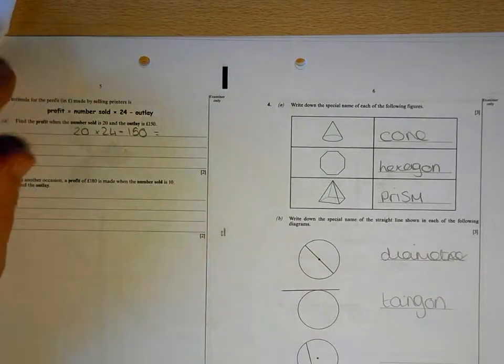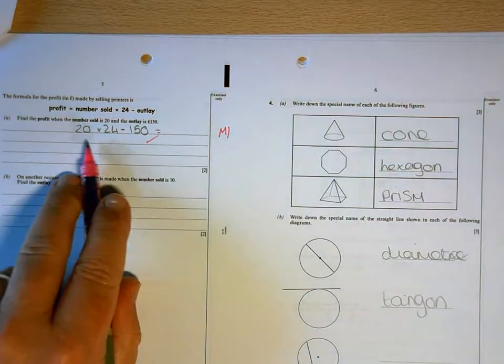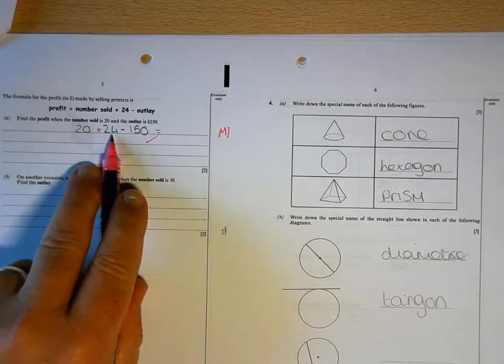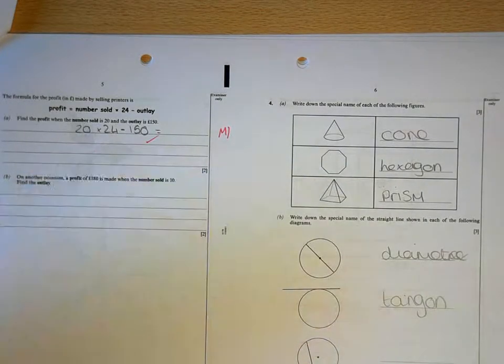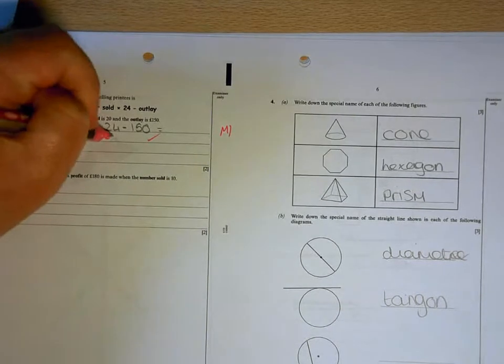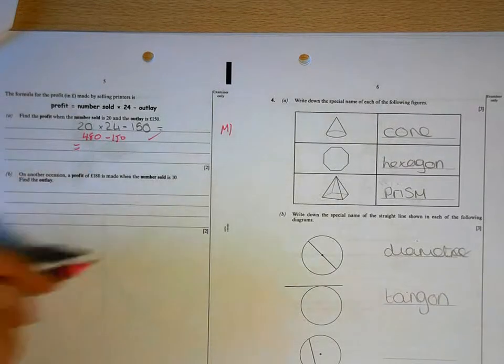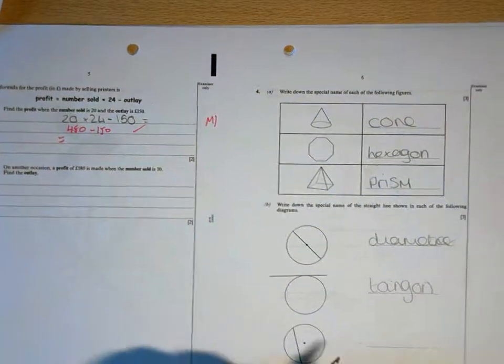20 times 24, take away 150, is the right method, but then you've got to actually work it out. So 2 lots of 24 is 48. And then because you're multiplying by 10, it's going to be 48 with a 0. Take away 150 and then work out that answer. So again, that is something that we will be practicing.